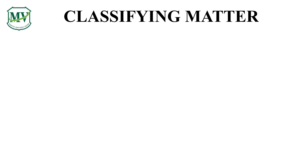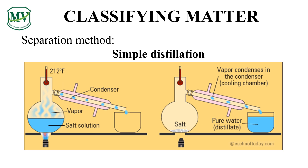Another interesting technique in separating mixture is distillation. This involves heating a mixture and bringing it to boiling point. The substance with the lowest boiling point will start evaporating, and when it reaches the condenser, it will start cooling down and becomes a distillate, which is now a pure substance without the solute. Would you like to try it yourself? Maybe later, because we need to learn another technique.